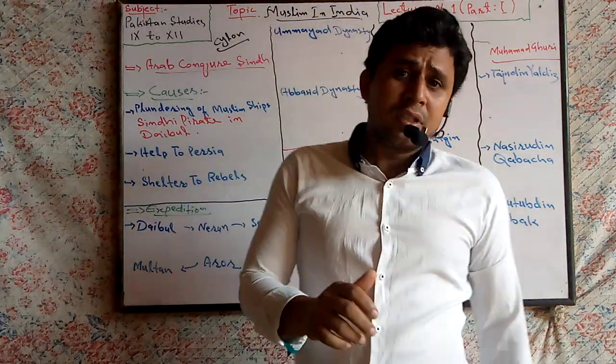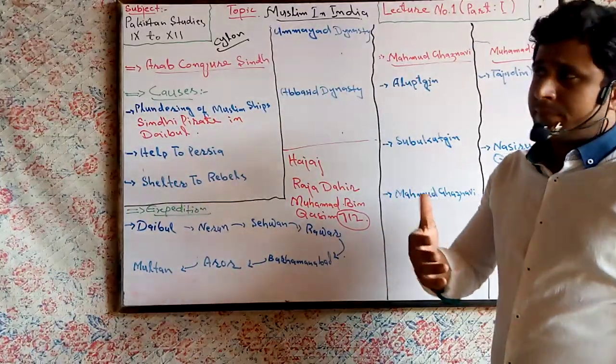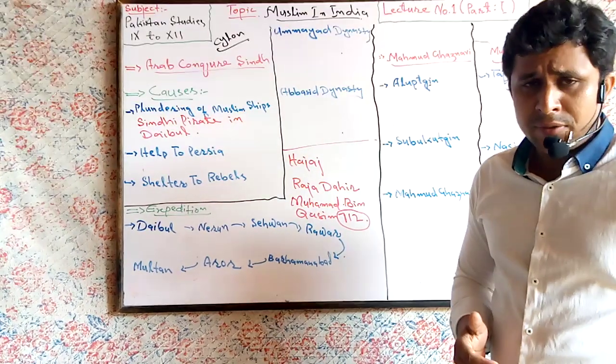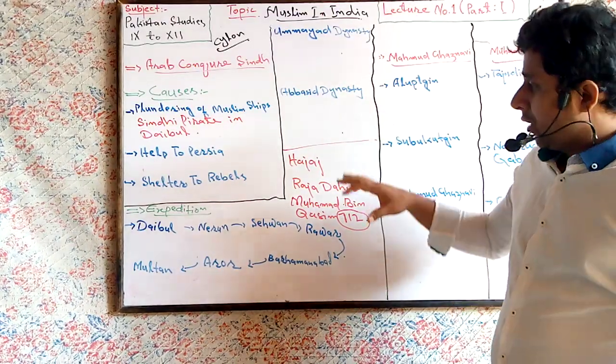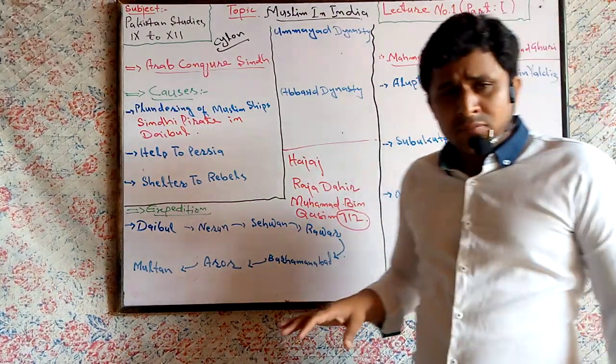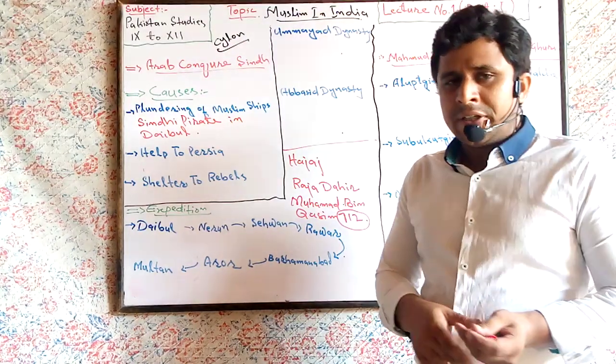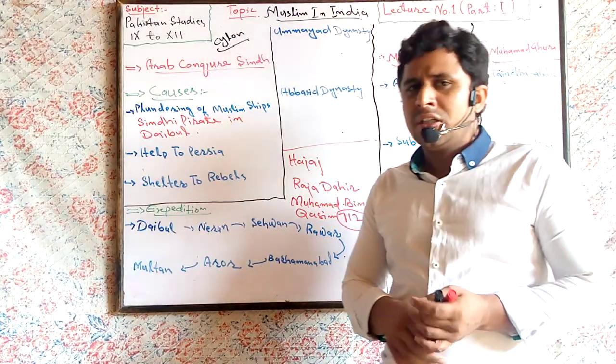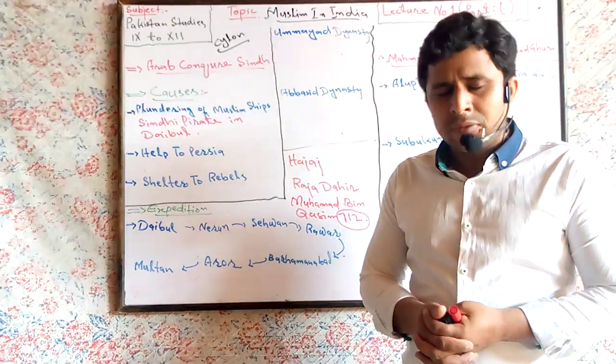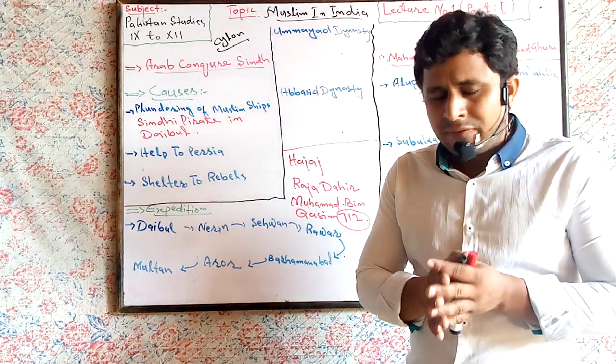On the order of Hajjaj bin Yussef. Before Muhammad bin Qasim, two expeditions were sent by Hajjaj bin Yussef to attack Sindh, but they failed.